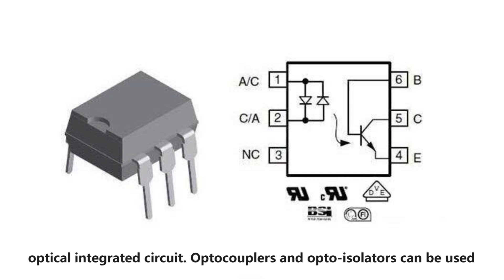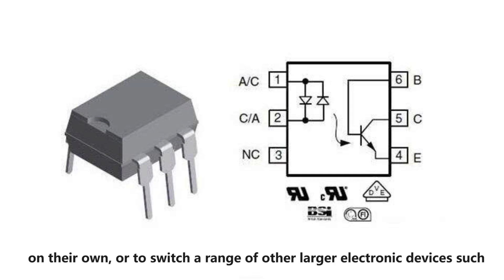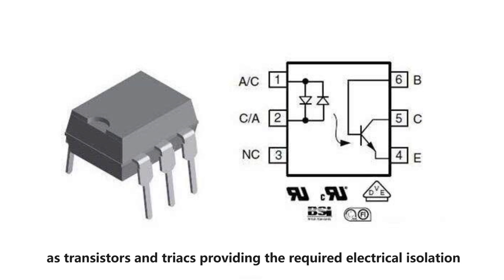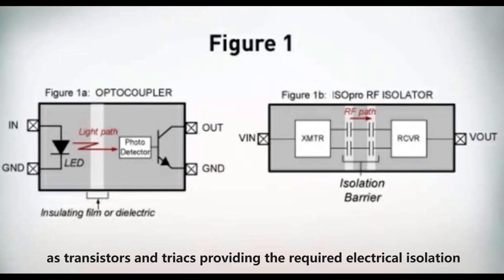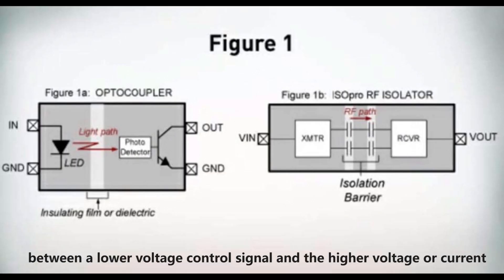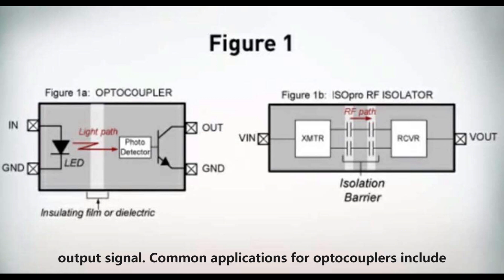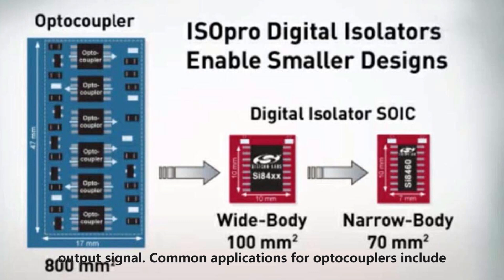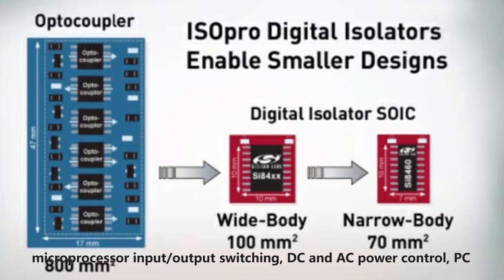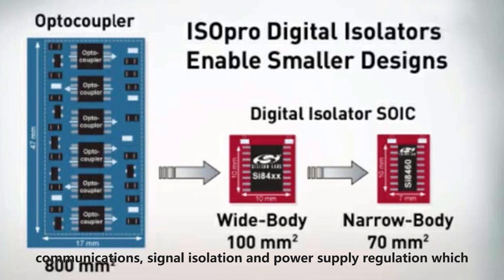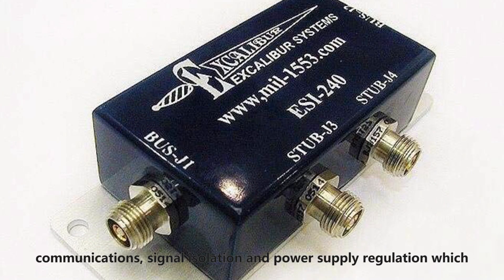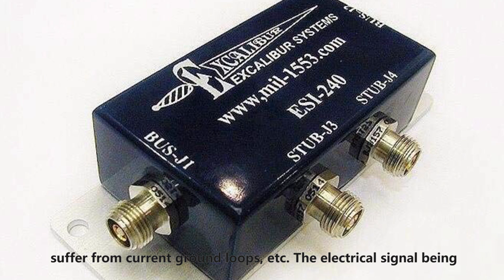Optocouplers and optoisolators can be used on their own, or to switch a range of larger electronic devices such as transistors and triacs, providing the required electrical isolation between a lower voltage control signal and the higher voltage or current output signal. Common applications include microprocessor input-output switching, DC and AC power control, PC communications, signal isolation, and power supply regulation.